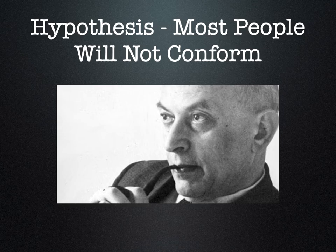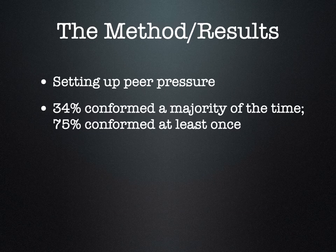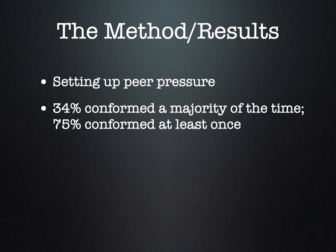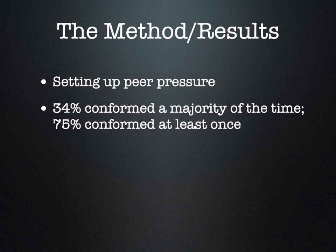Solomon Asch's hypothesis was that most people wouldn't conform — he believed we were able to stand up against peer pressure, that it wasn't going to be something that affected individuals. The method involved moving the subject around in different positions — were they the first one to go and then heard wrong answers behind them, or were they the third? What he found was that a third of people conformed a majority of the time.